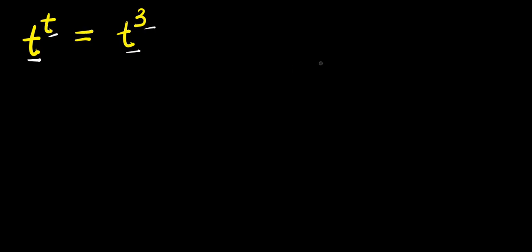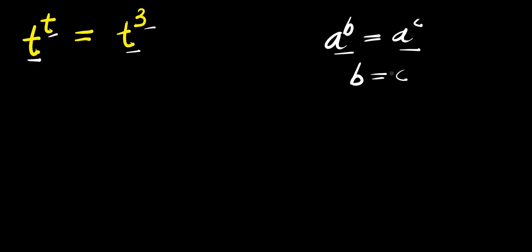Let's consider this identity: if you have a to the power b and this equals a to the power c, since the bases are the same, you compare the exponents, that is b equals c. Now applying the same identity here, you have t equals 3.